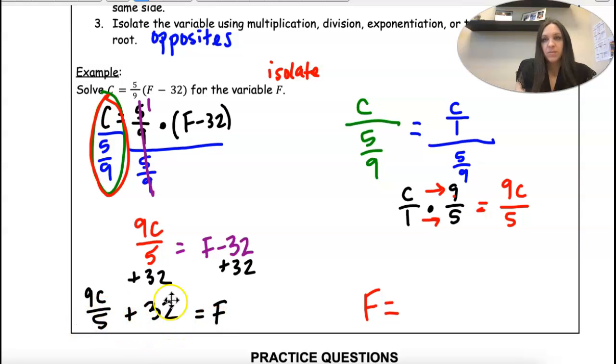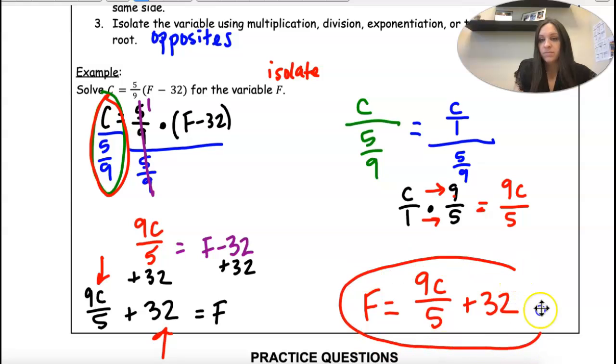So you might think, well, I want to combine these. You can't. This has a C, this doesn't. So our answer is 9C over 5 plus 32. That's as simplified as we can go. Notice that C is still part of our answer because it's there. You can't just get rid of it.